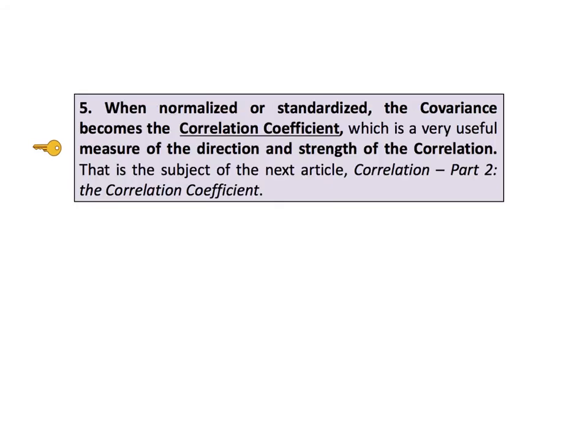KTU number 5. When normalized or standardized, the covariance becomes the correlation coefficient, which is a very useful measure of the direction and strength of the correlation. That is the subject of the next article, correlation part 2, the correlation coefficient.